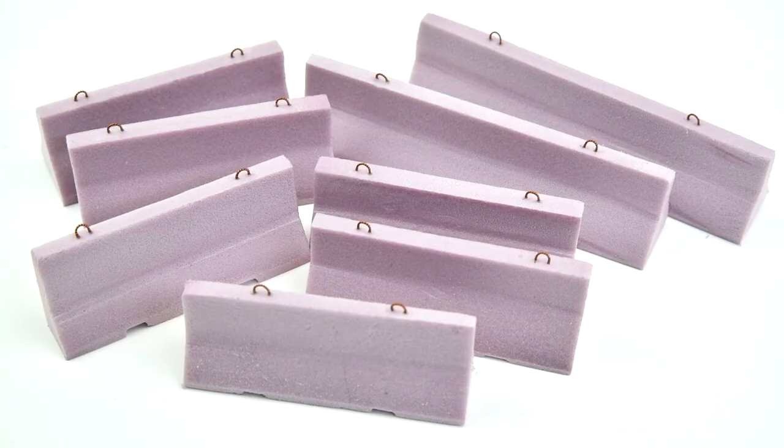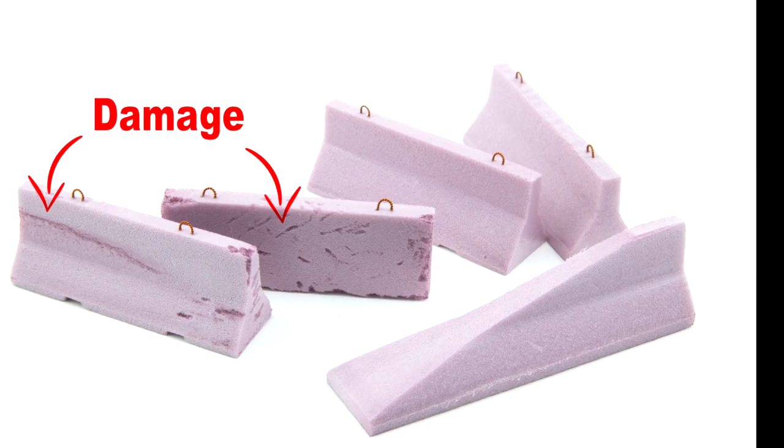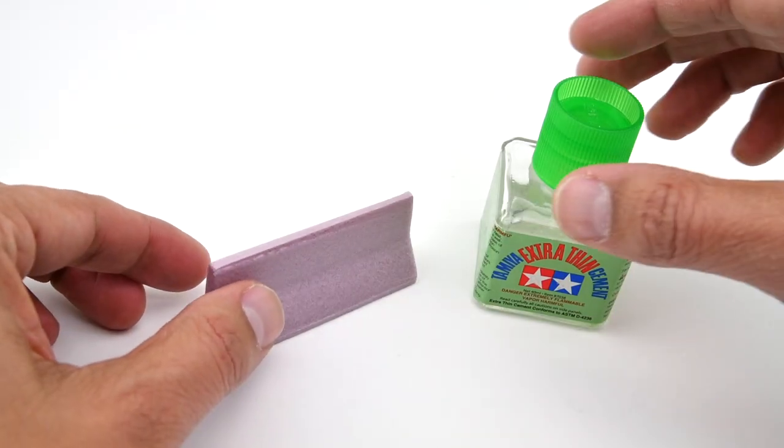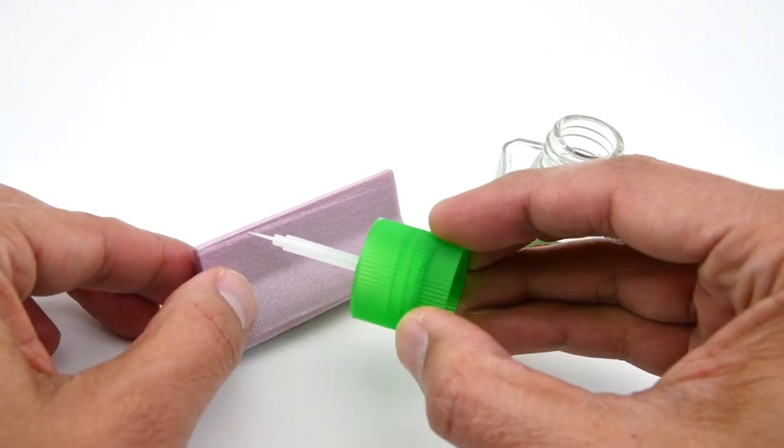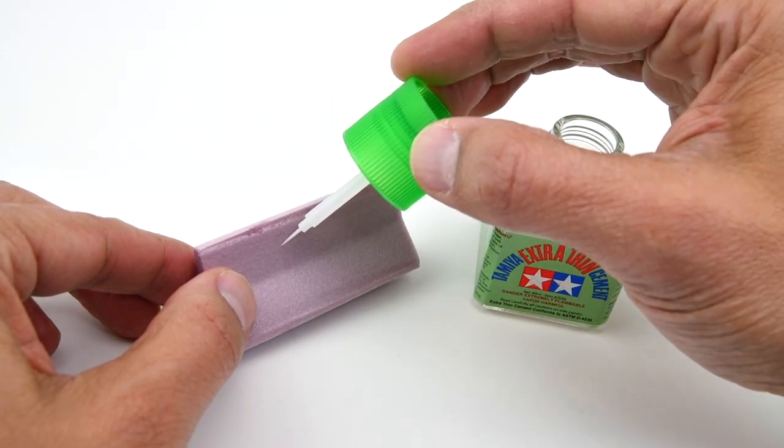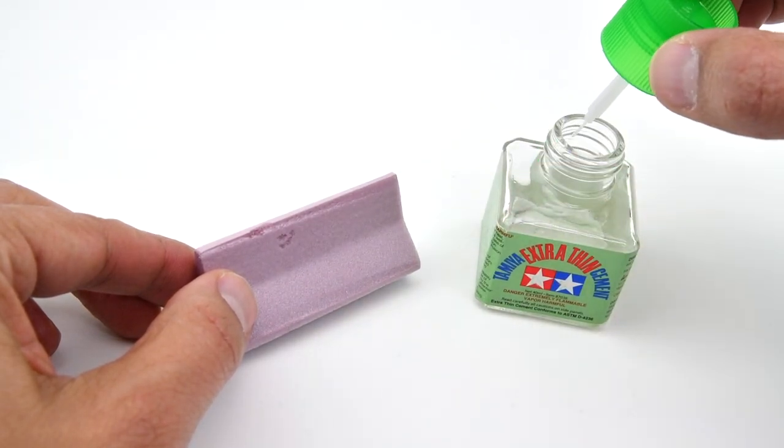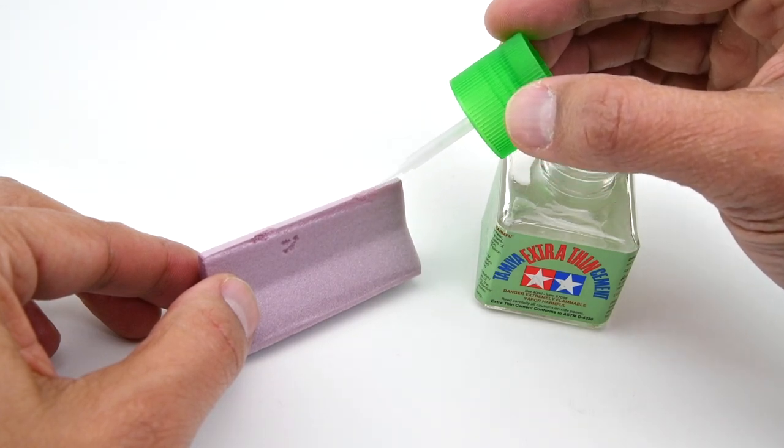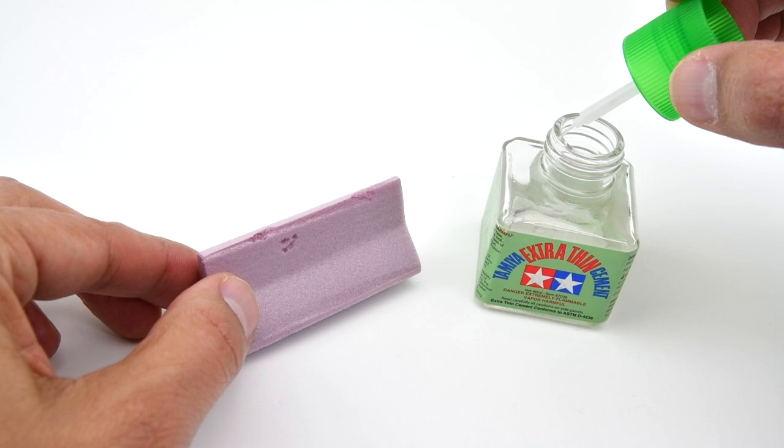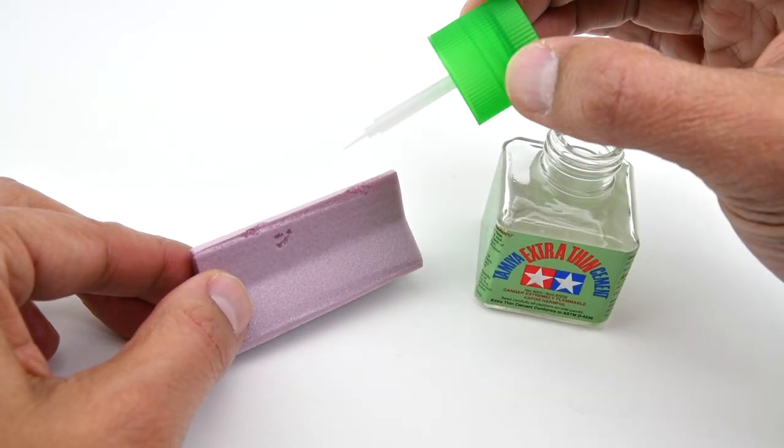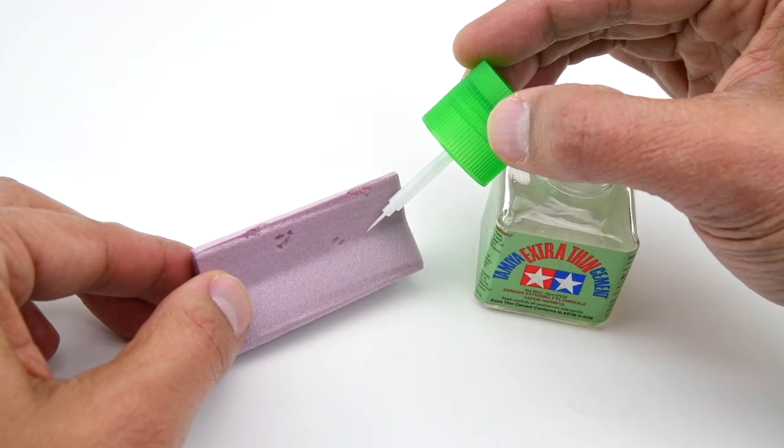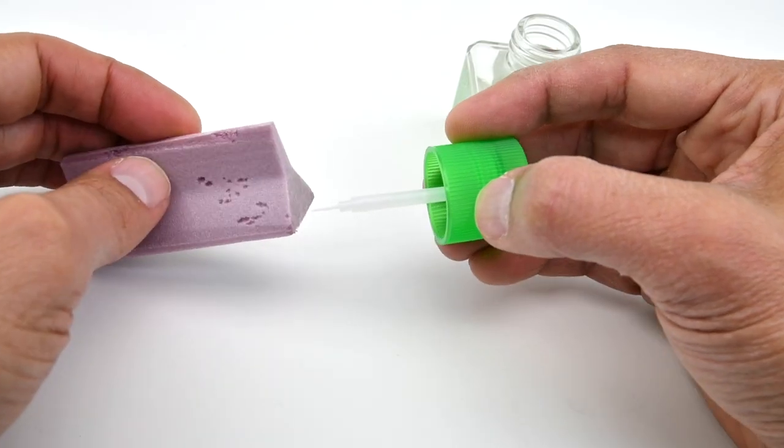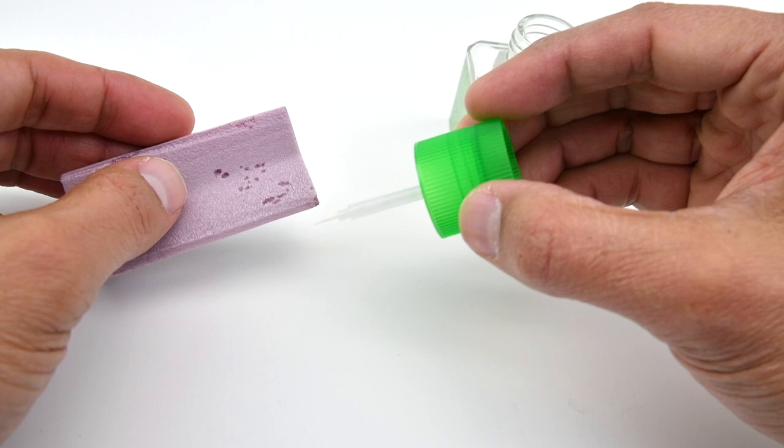The next technique is about creating scars, bullet holes, and random damage on the barriers. We will use extra-thin liquid cement. The cement will bite into the foam, creating random marks on it. Be careful to not apply too much cement, as it can create more texture than what you are looking for. Play with the foam leftovers using very small amounts of cement until you achieve the result you are looking for.